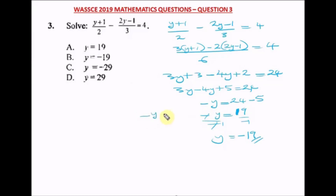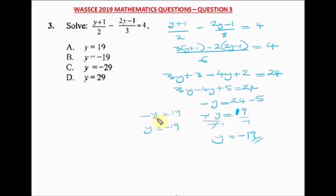Just to clarify: if you have −y = 19, it simply means y = −19. You divide both sides by negative one so that the negative cancels from y. Our answer is −19 and our right option is option B.